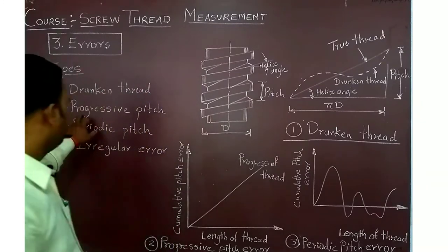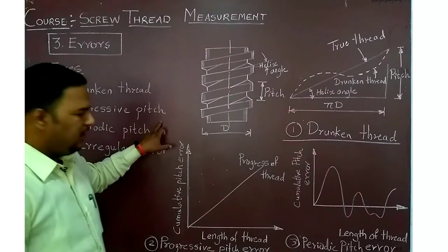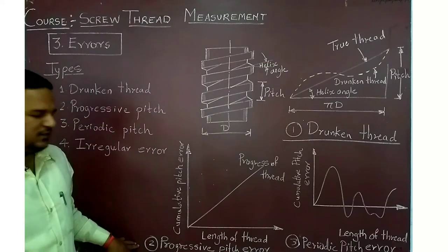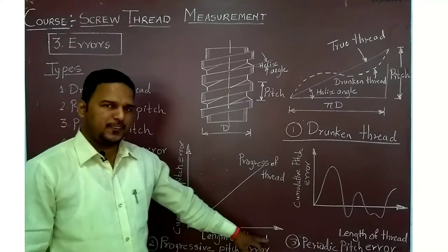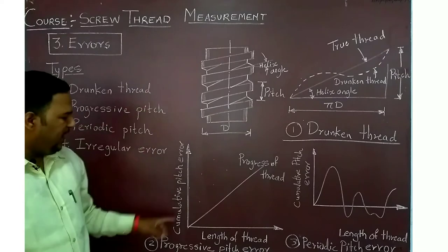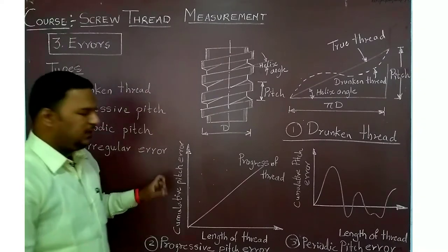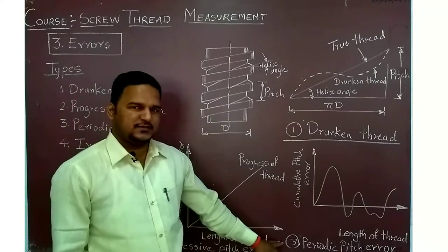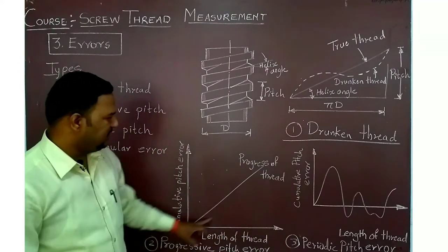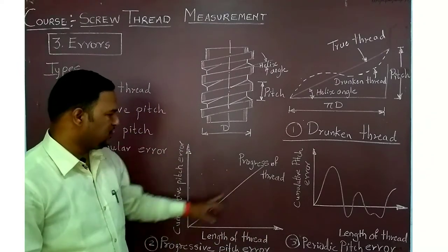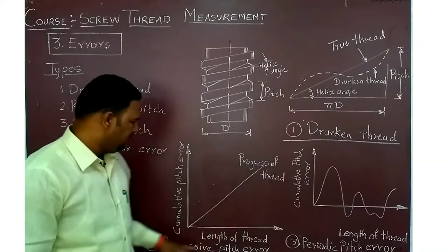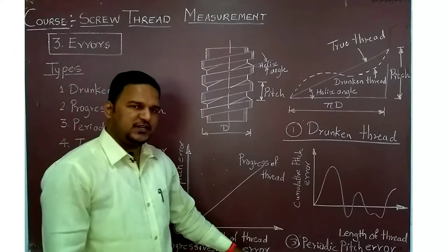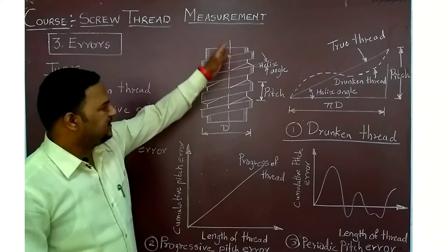The second type of error is progressive pitch error. In the progressive pitch error graph, the x-axis shows length of thread and the y-axis shows cumulative pitch error. The pitch error gets added as the length of thread increases, so they are directly proportional. Progressive pitch error occurs along the axis of the thread.